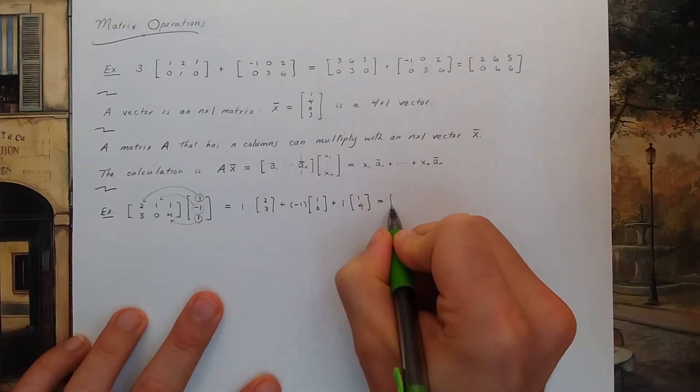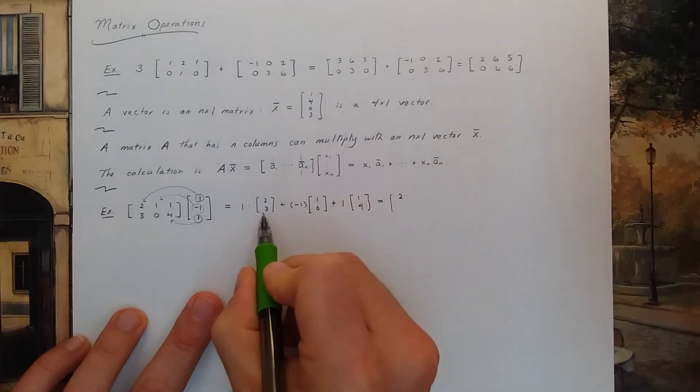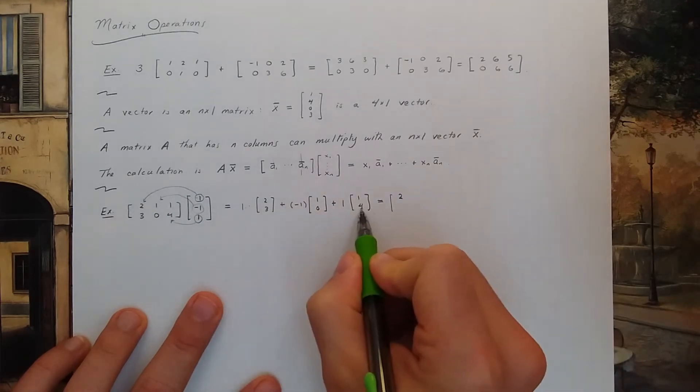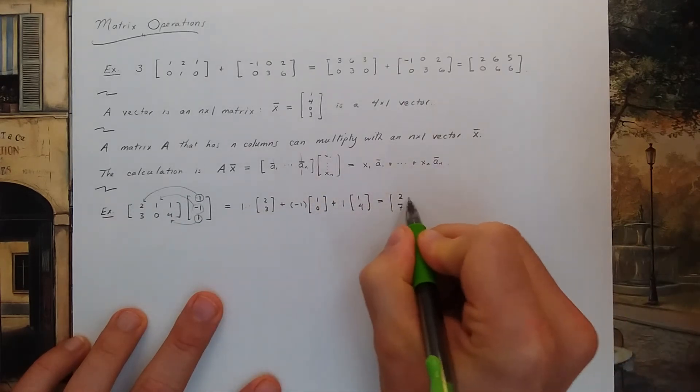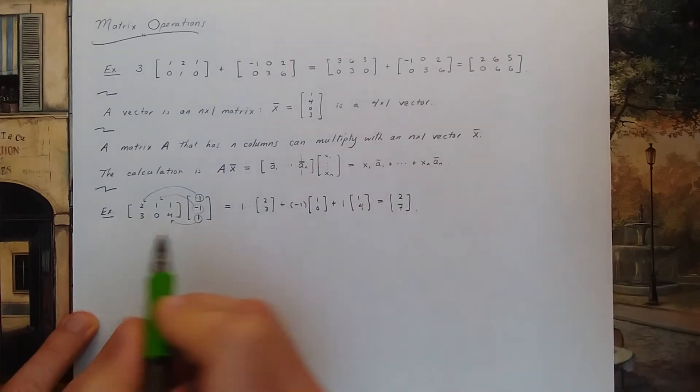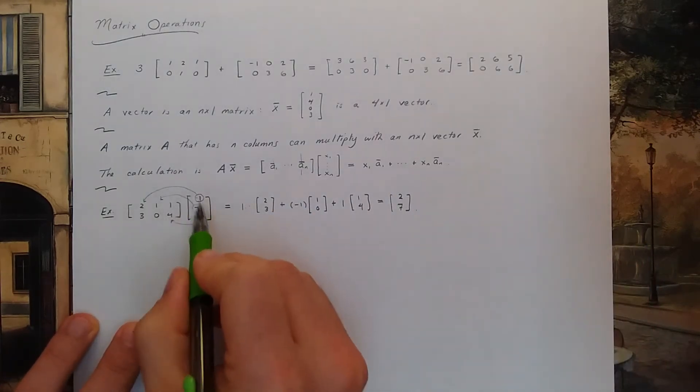I believe that gives me 2. And I could do 3 minus 0 plus 4. So 2, 7. So that's how you do a matrix times a vector.